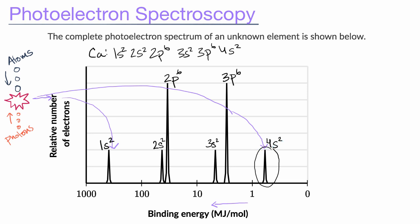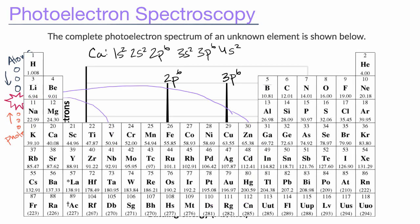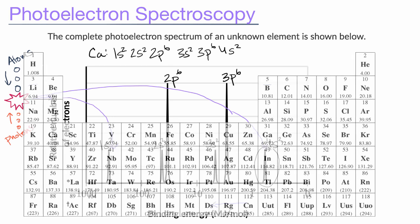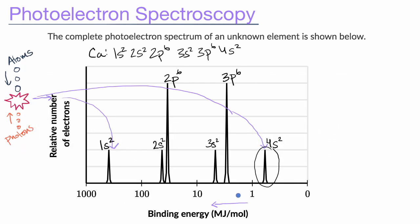Now, another interesting question that you might sometimes be asked is, if this is the photoelectron spectrum for calcium, what would be the photoelectron spectrum for the element right before calcium? For potassium. Pause this video and think about that. How would the photoelectron spectrum look different?